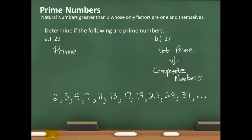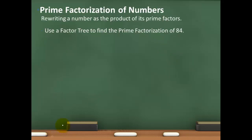One of the main uses of prime numbers is finding the prime factorization of numbers. The prime factorization of a number is basically rewriting a number as a product of its prime factors. Remember, product in math always means multiplication. So I want to be able to write a number like 84 as a product of just prime numbers. We're going to use what we call a factor tree to do that.